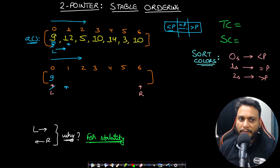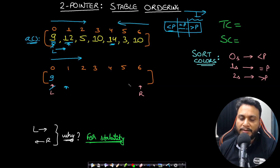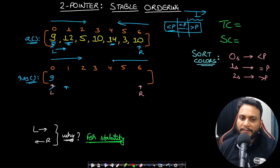The left pointer starts at index zero and moves right because we want the ordering from left to right. But for the greater-than-pivot pool, we can't also move left to right — if we see 12 and then 14, we'd push them in the wrong order. So elements greater than the pivot must be pushed from right to left, since they occupy the end of the result array. That's why we take a right pointer as well. We push items left to right if less than pivot, and right to left if greater than pivot.